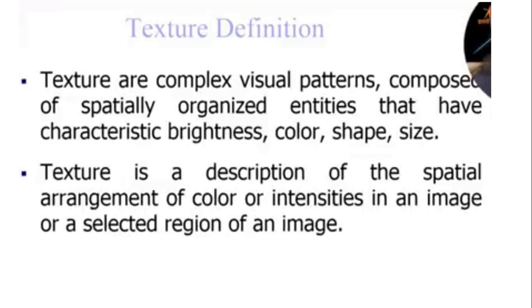Textures are complex visual patterns composed of spatially organized entities that have characteristics such as brightness, light, color, shape, size, etc. Texture is a description of the spatial arrangement of color or intensities in an image or a selected region of an image. In other words, textures refer to variations in the gray level or color. If gray level is constant in the object then there is no texture. If the gray level varies significantly within the image or object then the object is said to have a texture.